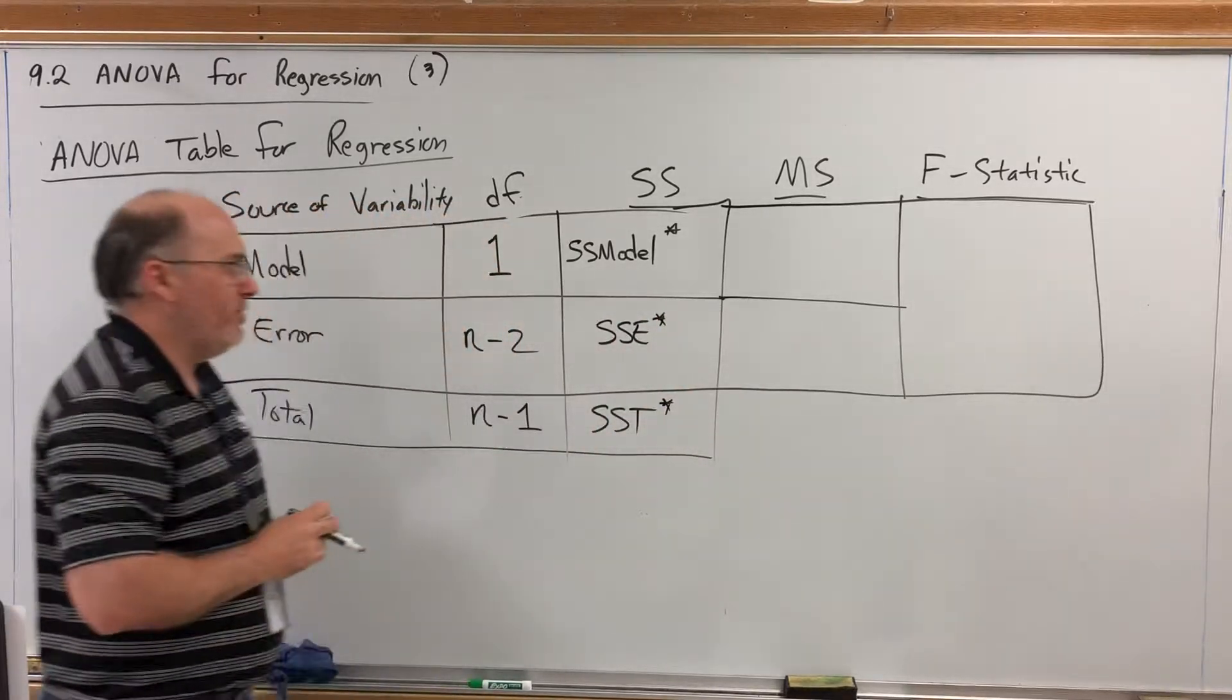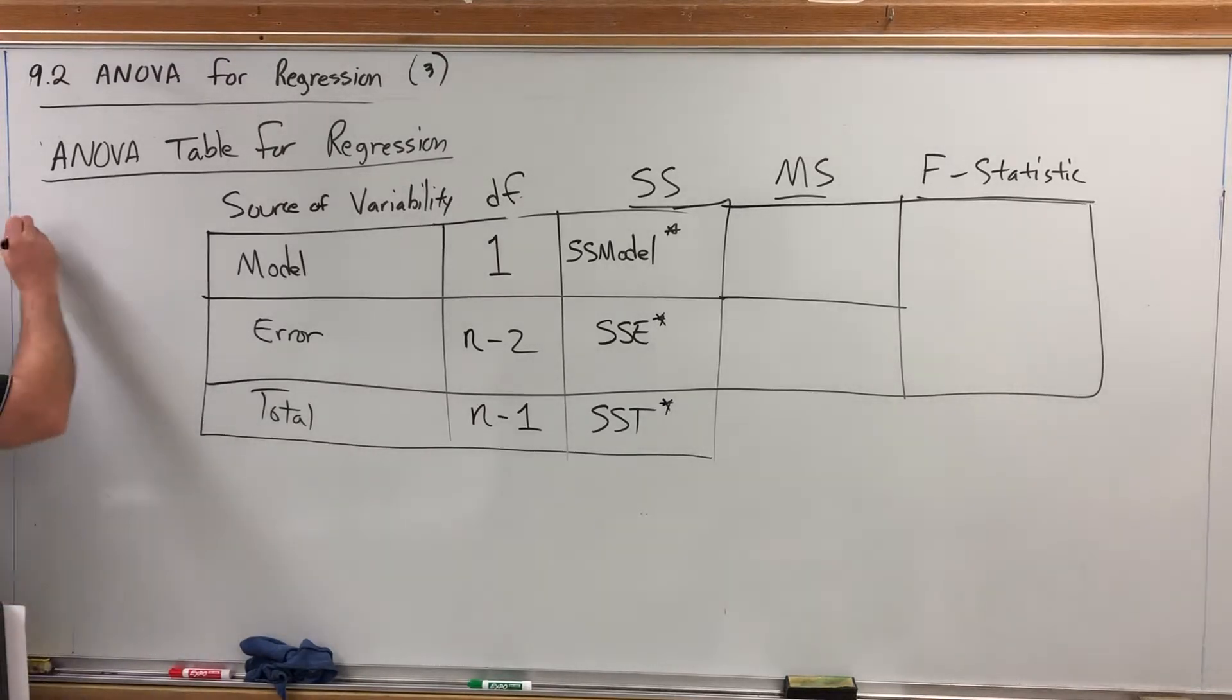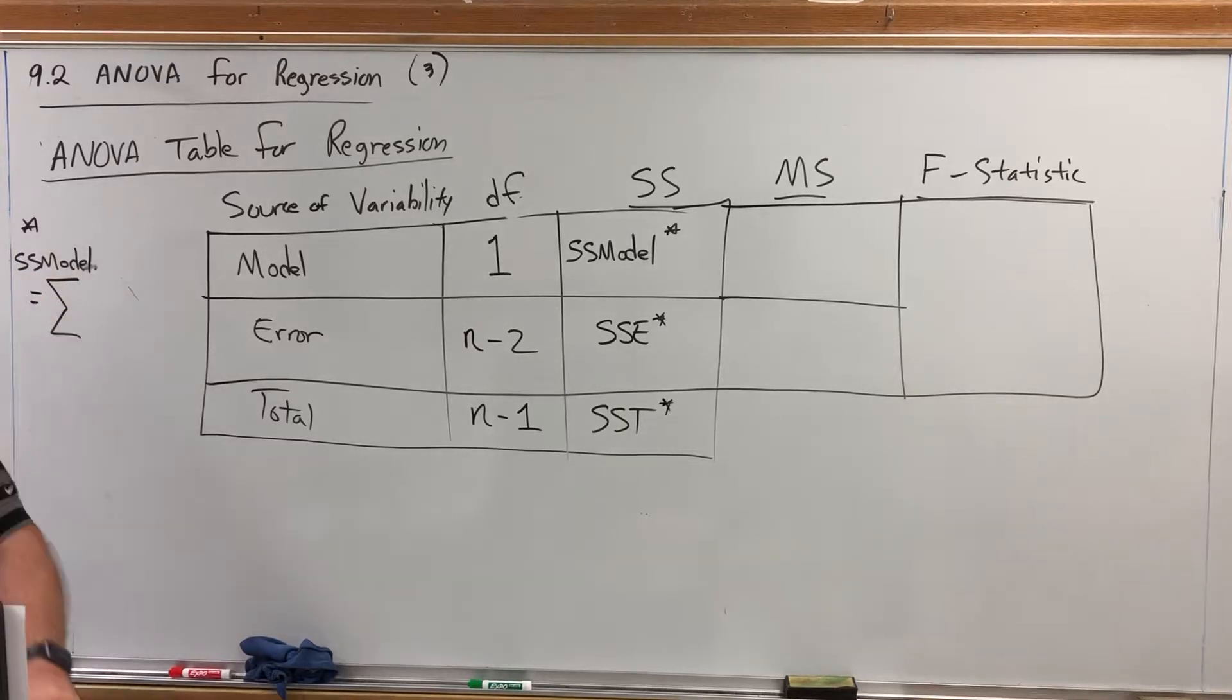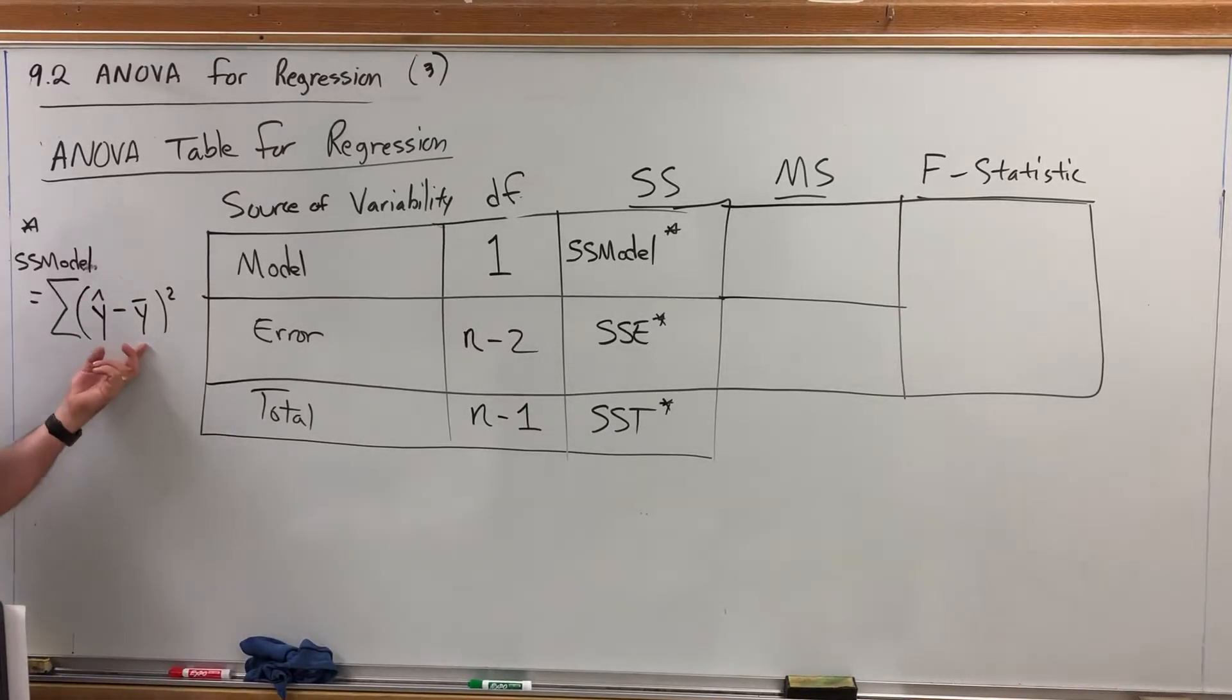I do want to quickly show you the formulas that generate the sum of squares. Just to kind of show you how they're related. SS model is equal to the sum of the squares of y hat minus y bar. y bar being the mean or the average of all of the observed y values. And y hat being the predicted y value for each point. So we're squaring the deviations between what is predicted for each x and what the average y value was.